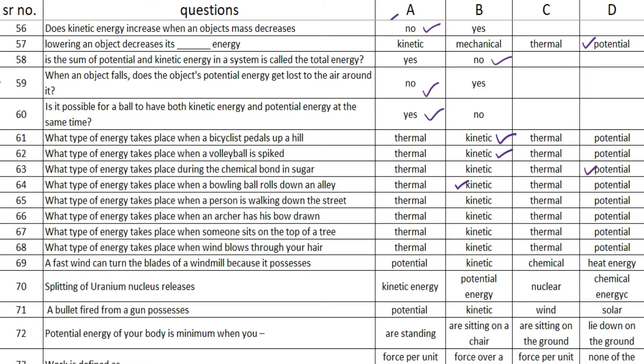What type of energy takes place when a person is walking down the street? The answer is option B — kinetic. The next one is: what type of energy takes place when an archer has his bow drawn? The answer is option D — potential. What type of energy takes place when someone sits on the top of a tree? The answer is option D — potential.